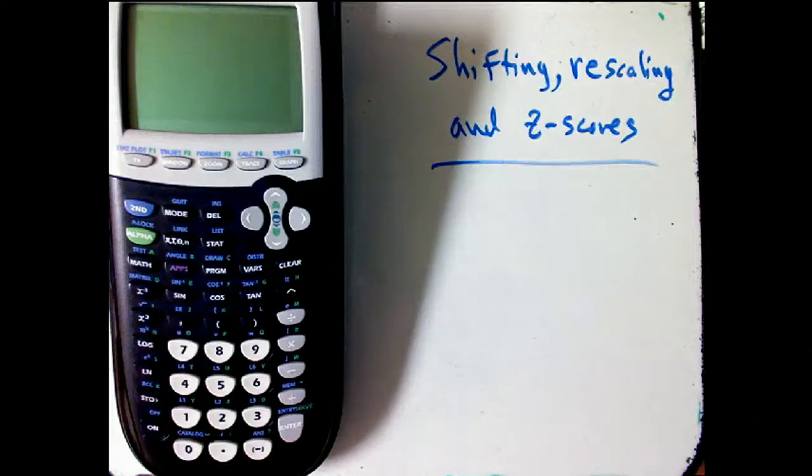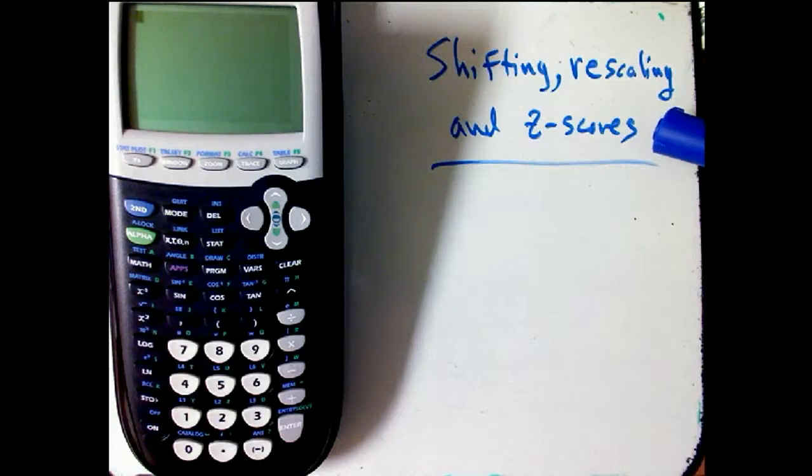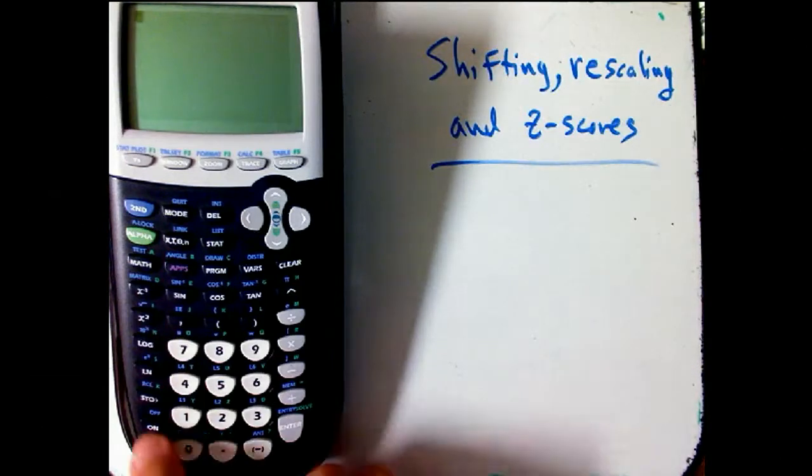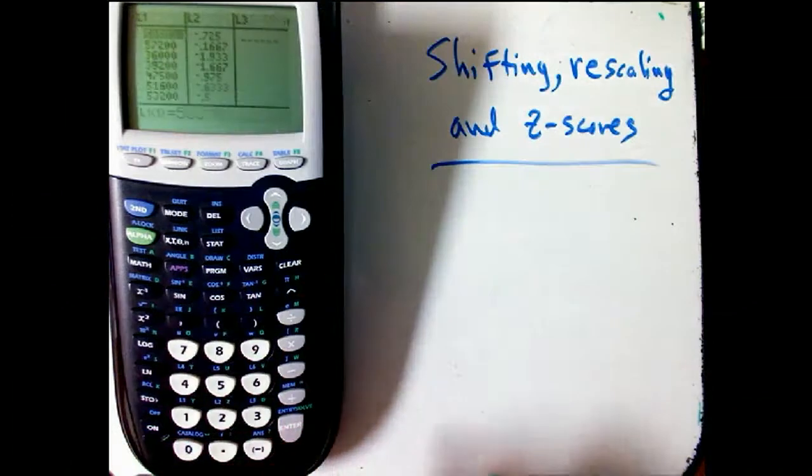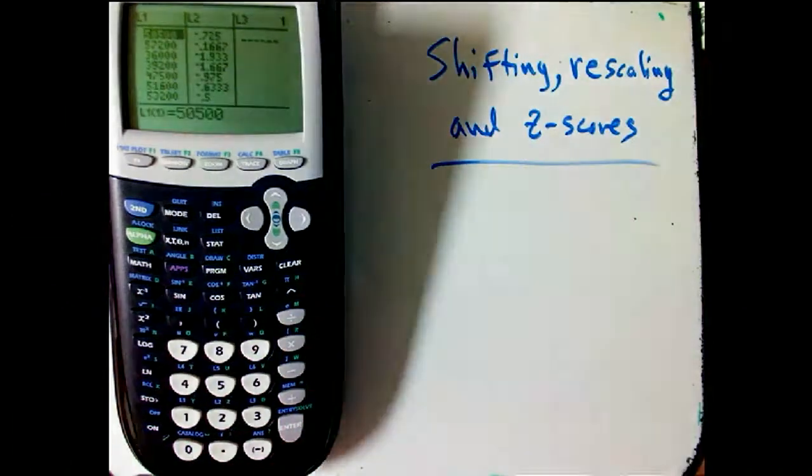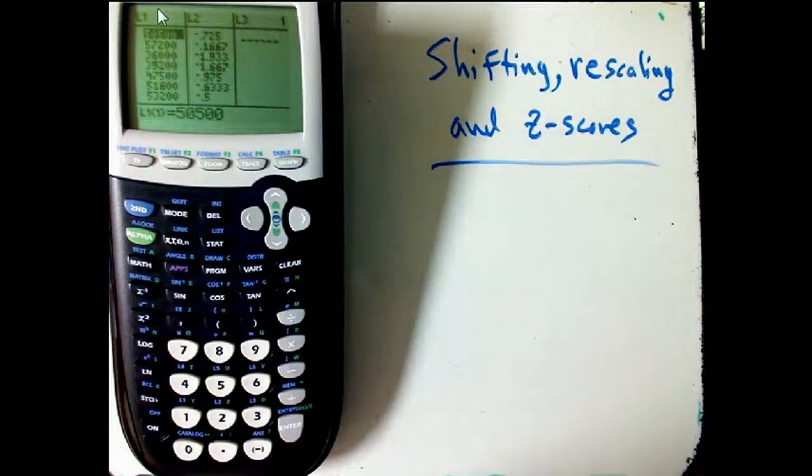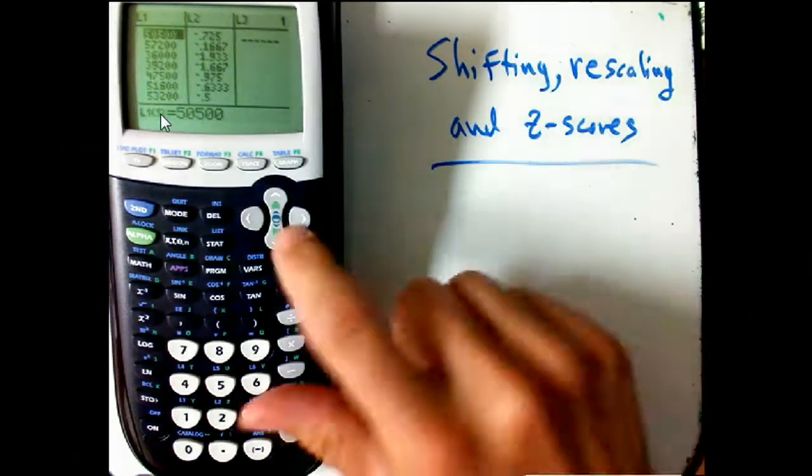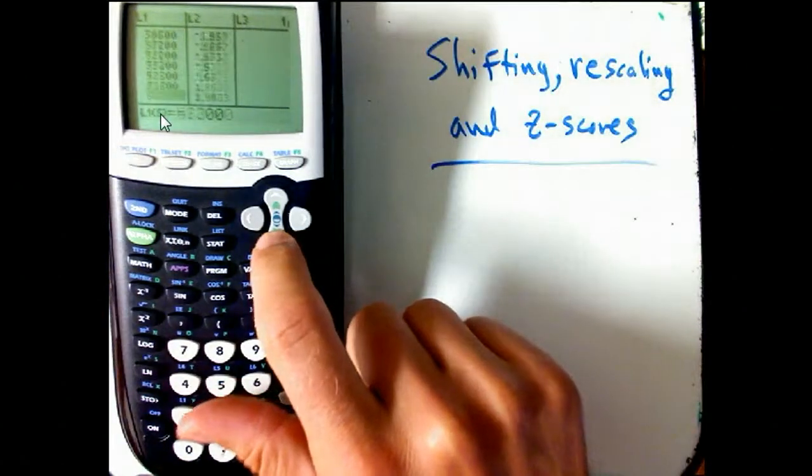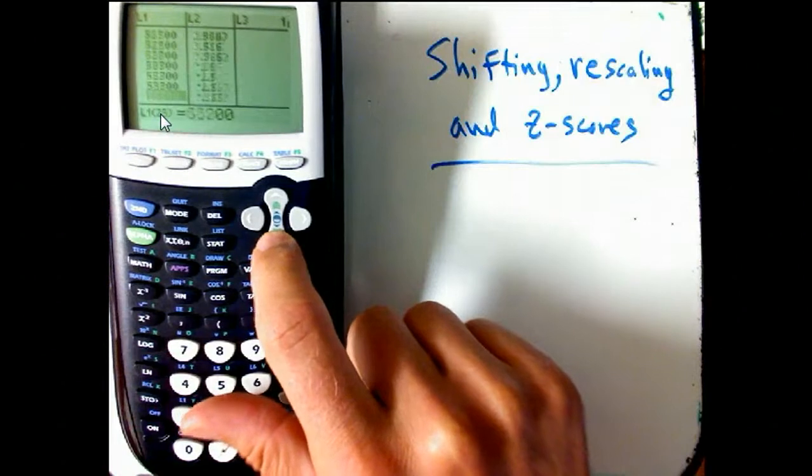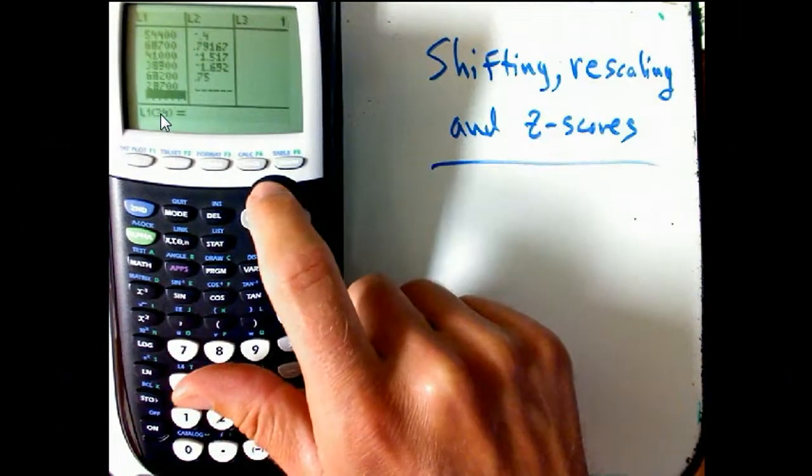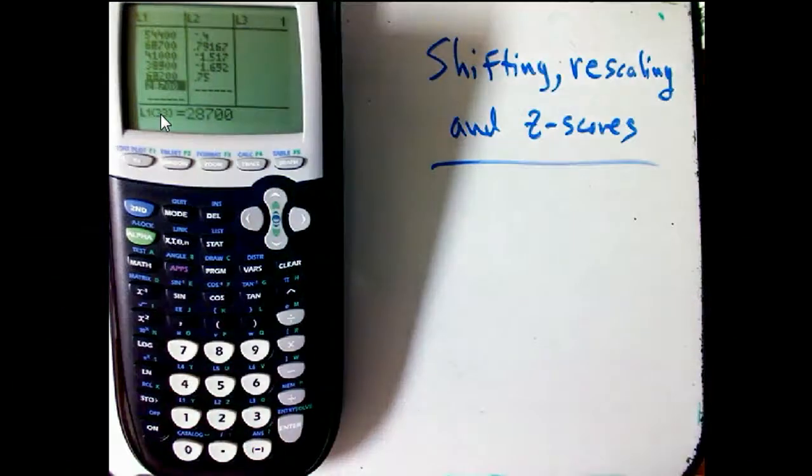Here's an example of shifting, rescaling, and using z-scores, which is one of the most common ways to shift and rescale data.